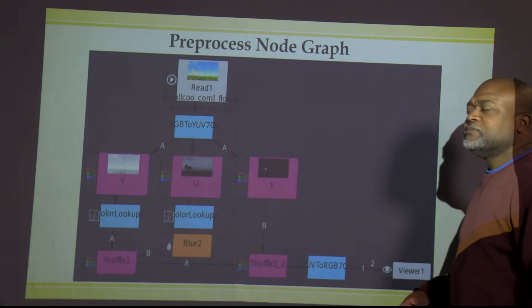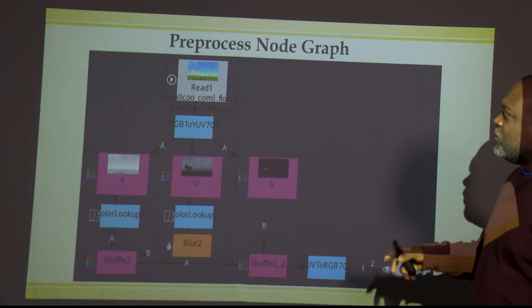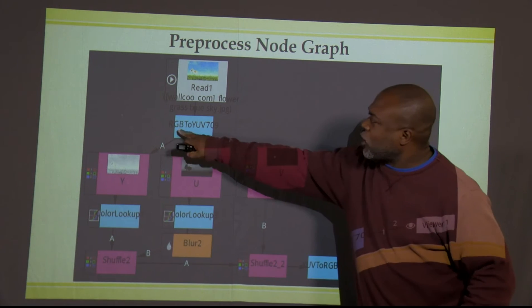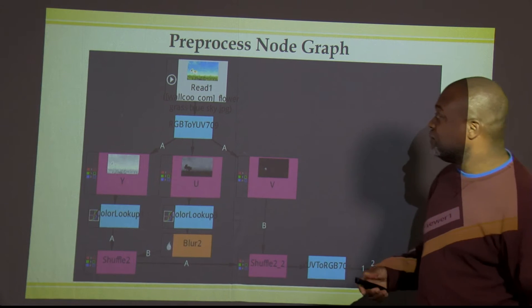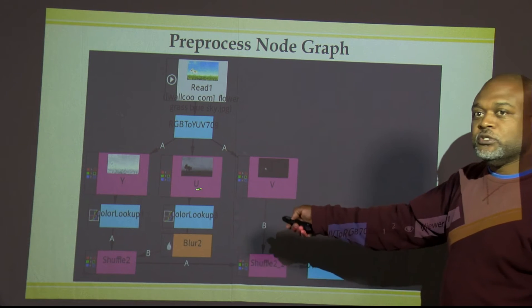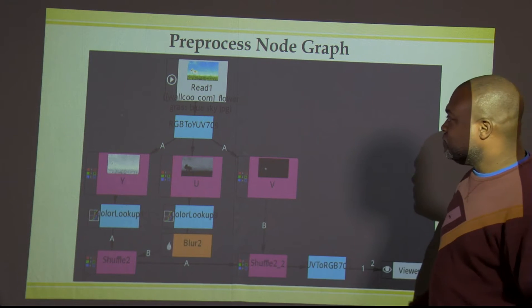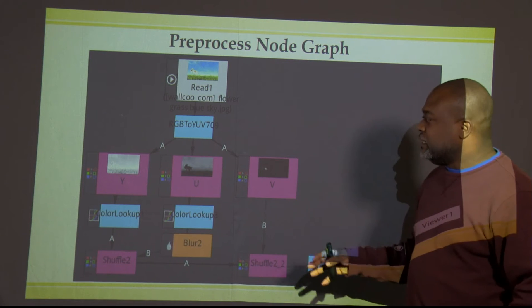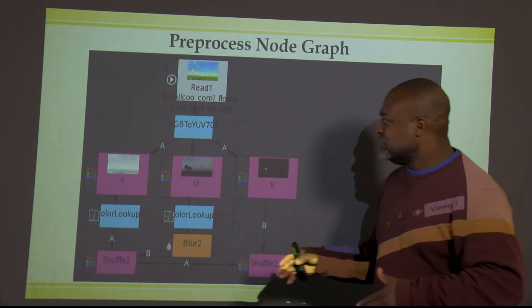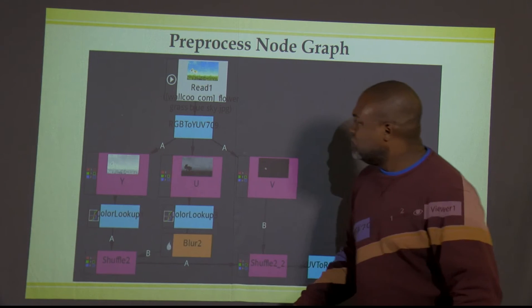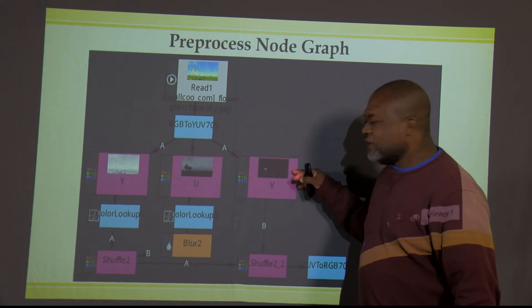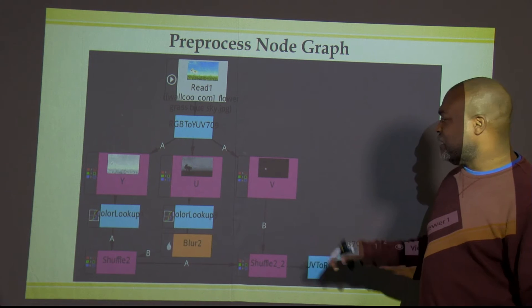This right here is my node graph setup. So what I did is this: I have my original image there, I'm coming direct into an RGB to YUV 709. And by doing that, I was able to break out the Y channel, the U channel, and the V channel. And what I wanted to do is use my color lookup nodes, where they allow me to add contrast to the Y channel, as well as to the U channel. It wasn't that much information here in the V channel, so therefore there was no need to process all that extra information.